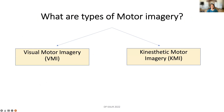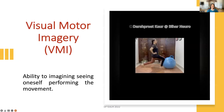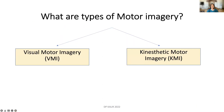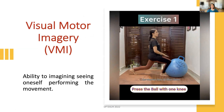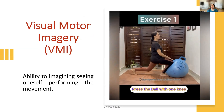There are two types of motor imagery. One is visual motor imagery and the other is kinesthetic. Visual motor imagery is the ability to imagine seeing oneself performing the movement. If you have done the previous year's exercise program, you can relate — you imagine yourself performing the same exercise. That is visual motor imagery.